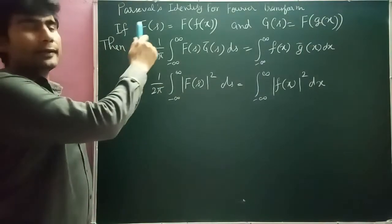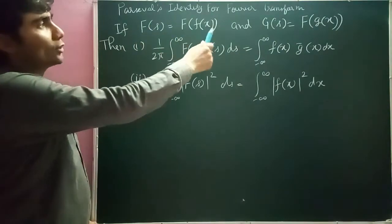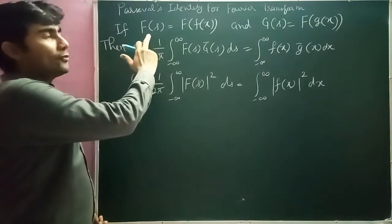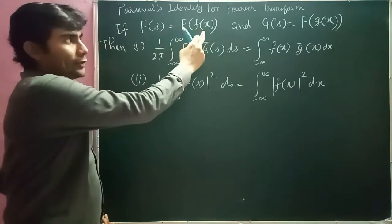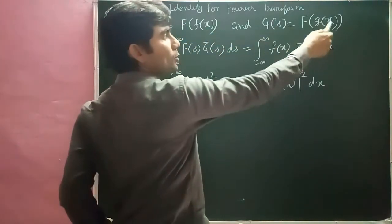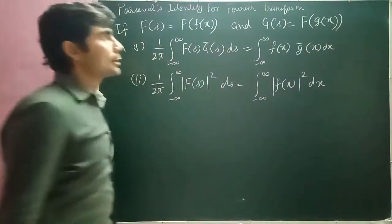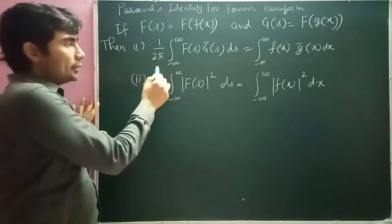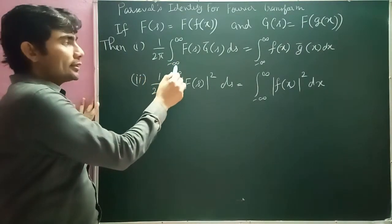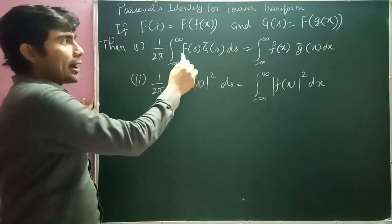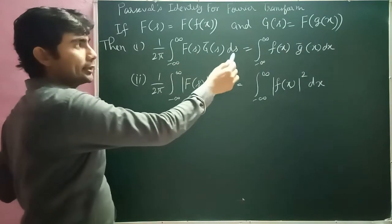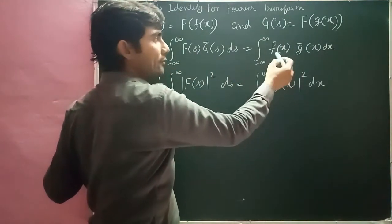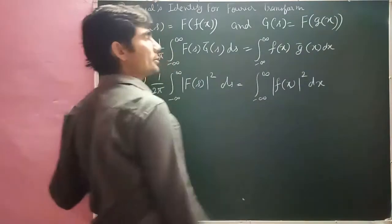Now we have Parseval's identity for Fourier transform: if F(s) is the Fourier transform of f(t) and G(s) is the Fourier transform of G(x), then (1/2π) integral from minus infinity to infinity of F(s) · Ḡ(s) ds equals integral from minus infinity to infinity of f(x) · ḡ(x) dx.